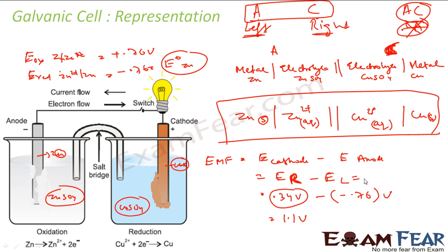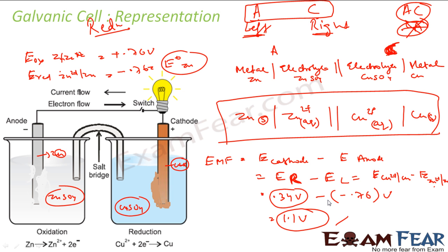E_right was the reduction potential of Cu²⁺ to Cu; E_left was the reduction potential of Zn²⁺ to Zn. Note: here I am not saying E of Zn to Zn²⁺ — I am talking about reduction in both cases, from Zn²⁺ to Zn, because reduction is the official electrode potential. So the total EMF of this Daniel cell comes out to 1.1 V. The remaining question is: how do we find these standard reduction potentials experimentally? That will be covered next.